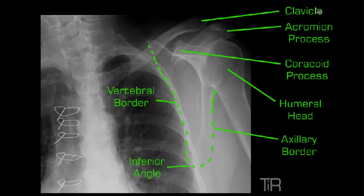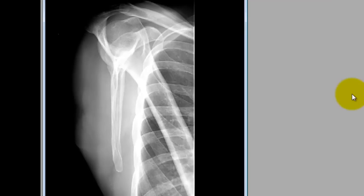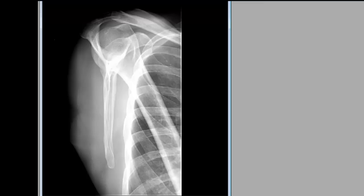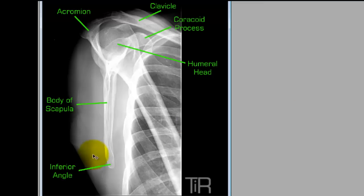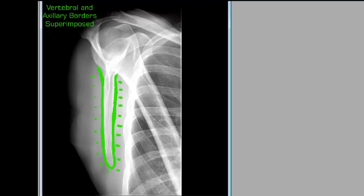Let's look at our first image — let's call this an LPO. I'm not sure if it was upright or supine, but it's beautifully positioned. You can see separation of the scapular body from the ribs. You see a humeral head right between the acromion process and the coracoid process. The inferior angle needs to be included as well. Notice that the vertebral border and axillary border are superimposed, and that is ideal — that's what we're shooting for with this position.